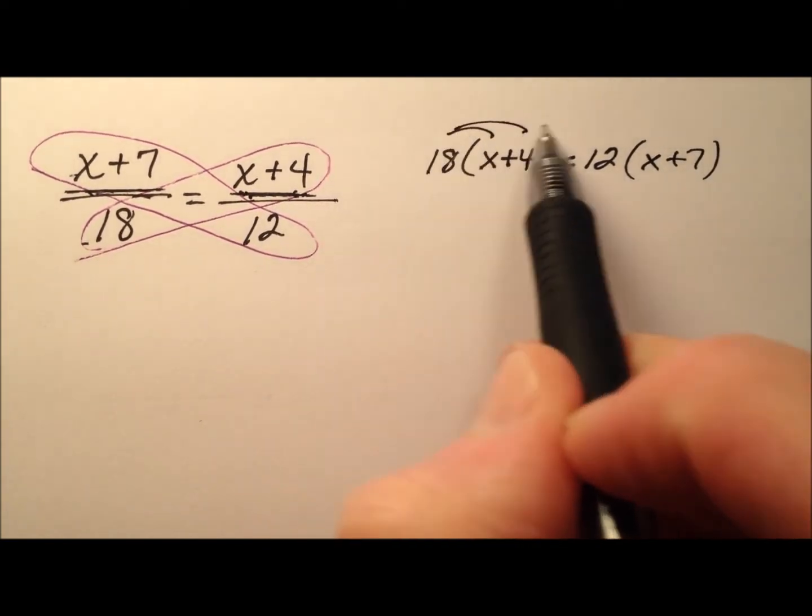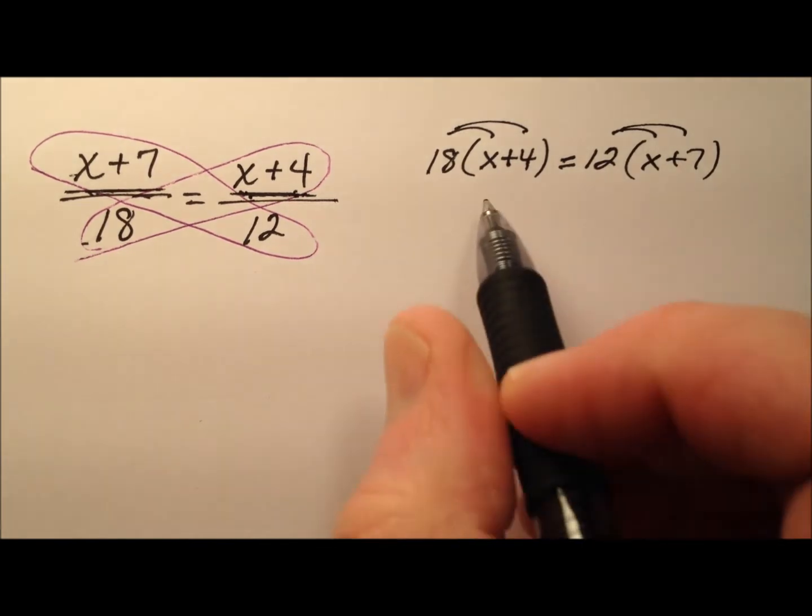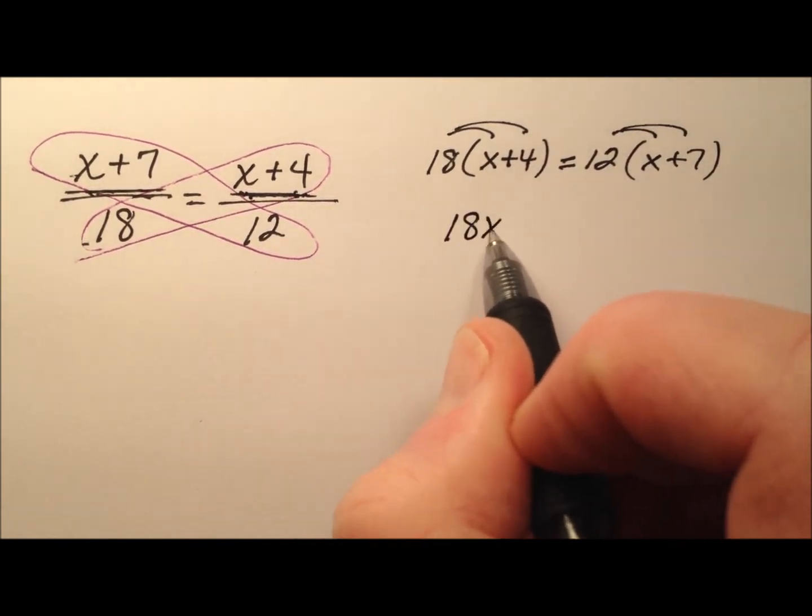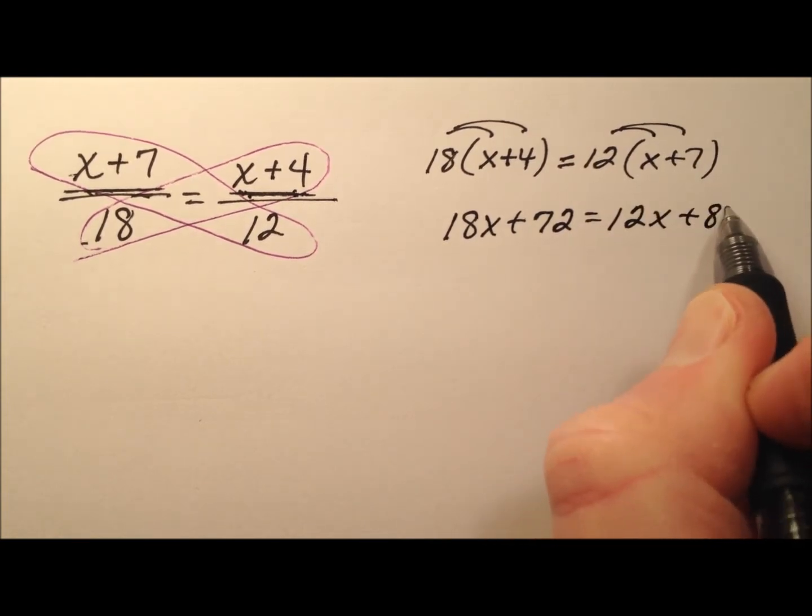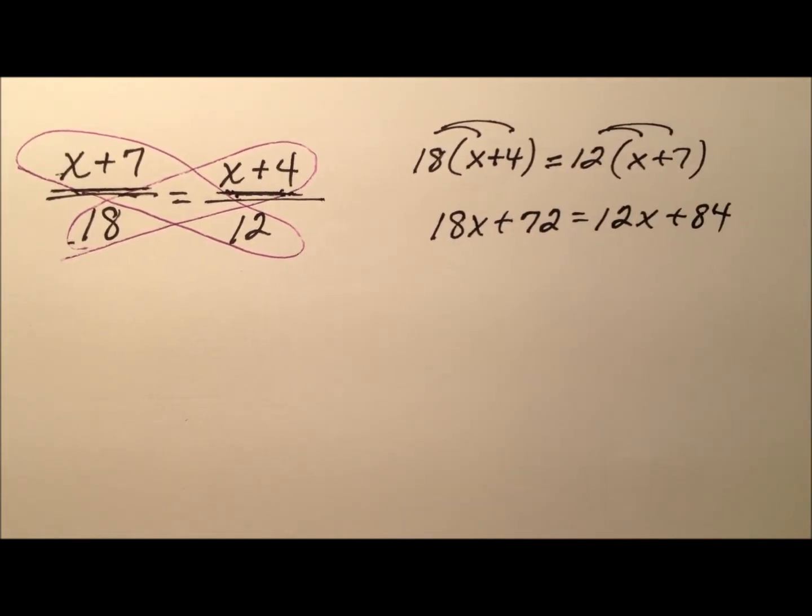So when we distribute here and distribute here, it looks like 18x plus 72 equals 12x plus 84 for those products.